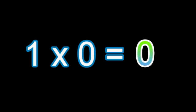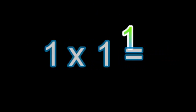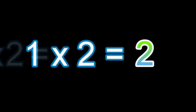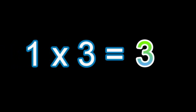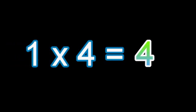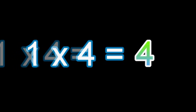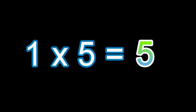1 times 0 equals 0. 1 times 1 equals 1. 1 times 2 equals 2. 1 times 3 equals 3. 1 times 4 equals 4. 1 times 5 equals 5.